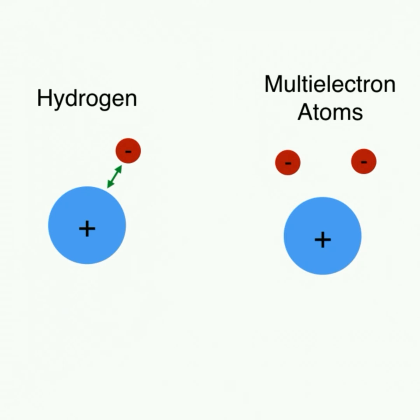In a helium atom, we have the interactions between our nucleus and two electrons, as well as the interaction between the two electrons themselves.